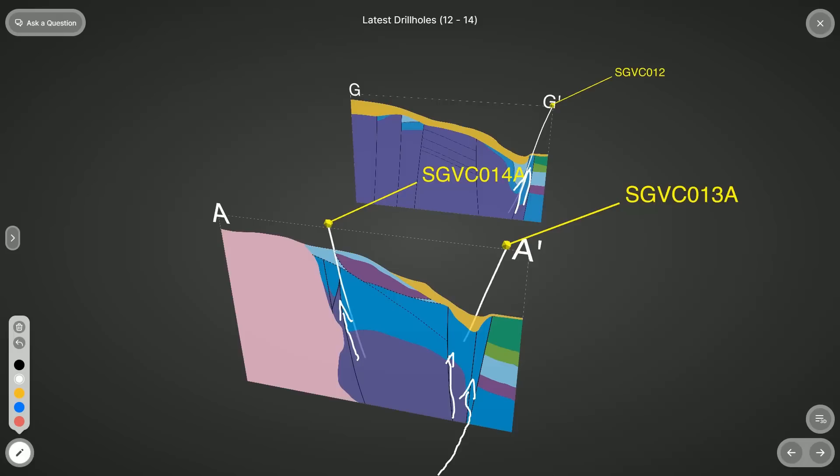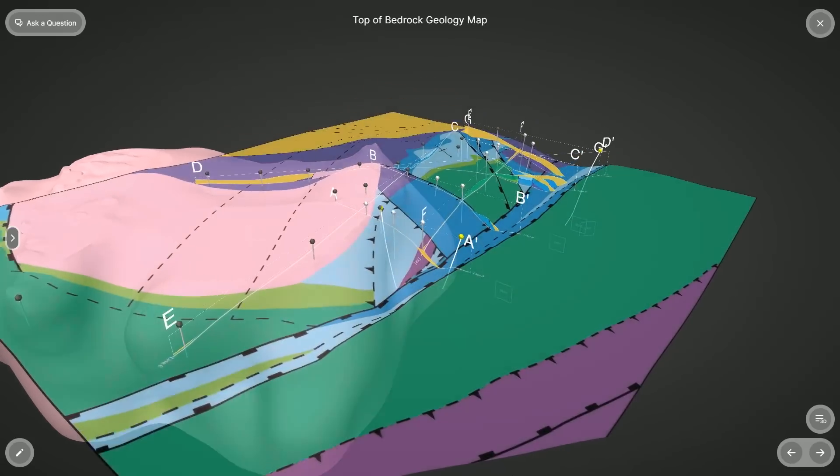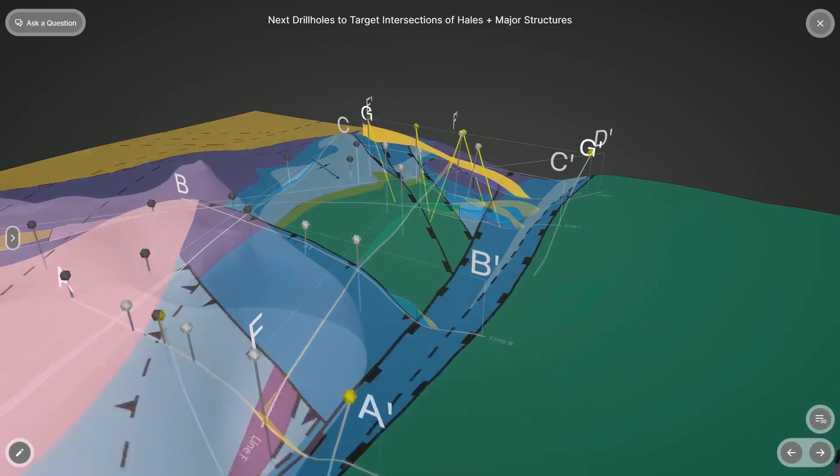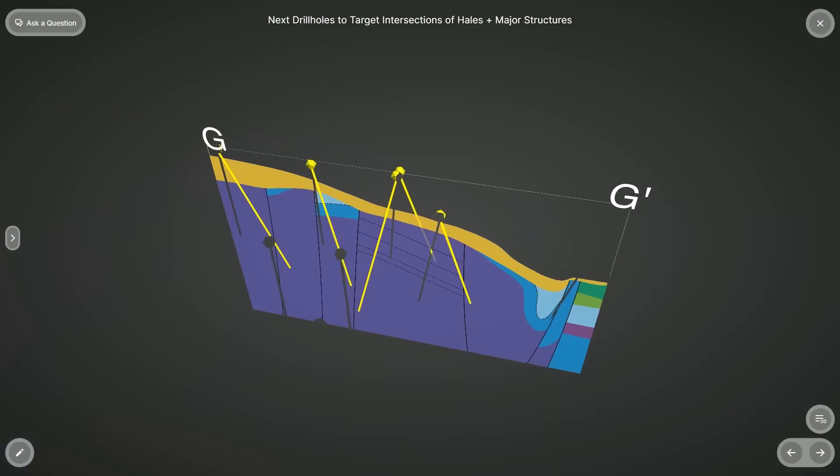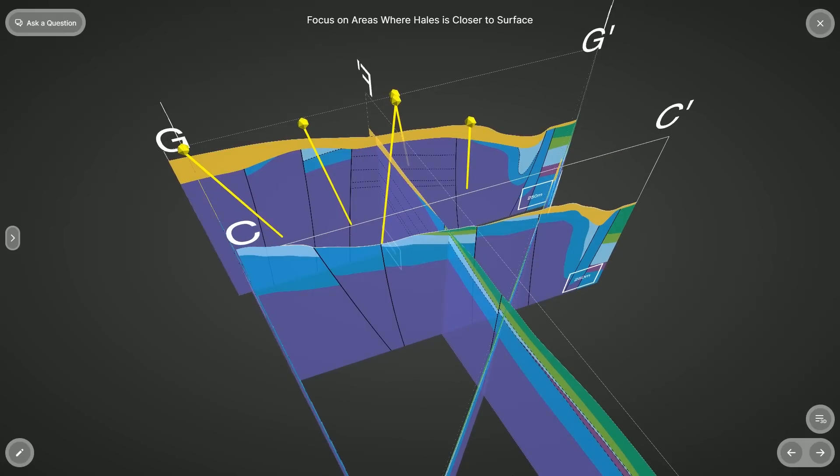This recognition has driven a year-long re-logging initiative to update our geologic model, the results of which we've released today. With a now improved understanding of the location and nature of the major structural features across the project, we are using our updated model to target our next drill holes in the places of highest potential, specifically in areas where these structural features intersect the Hales, which we plan to further prioritize based on where we expect the Hales has been brought closer to the surface in order to minimize our need for deeper drill holes.